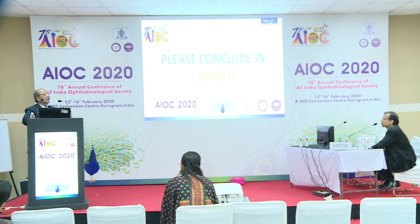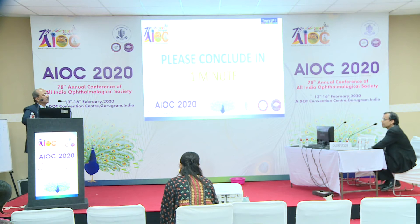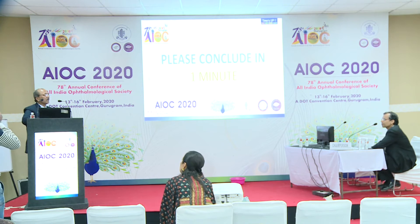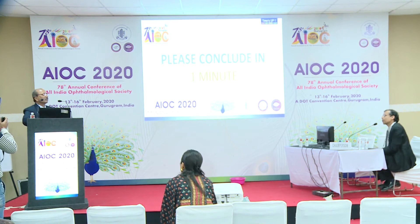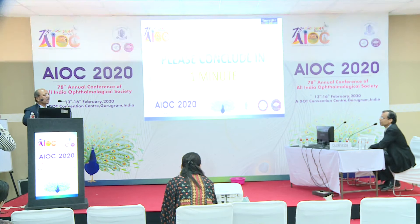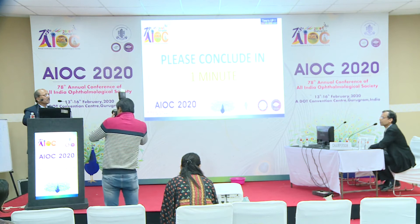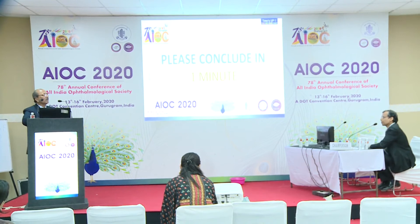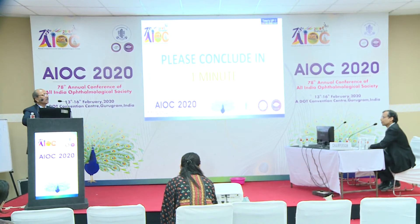Regarding lens power adjustment for children less than two years of age: we initially used the SRK2 formula and now also use the SRK-T formula. There are also Dahan's guidelines from 1997: for less than two years use approximately 20 percent IOL power reduction; for two to eight years use 10 percent IOL power reduction to compensate for myopic shift, but don't aim for too much hypermetropia post-operatively to avoid anisometropia.